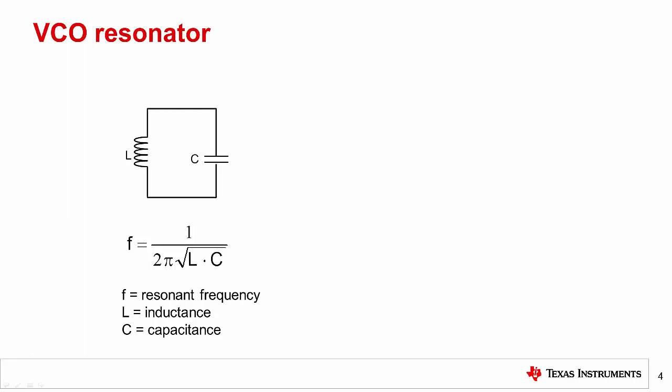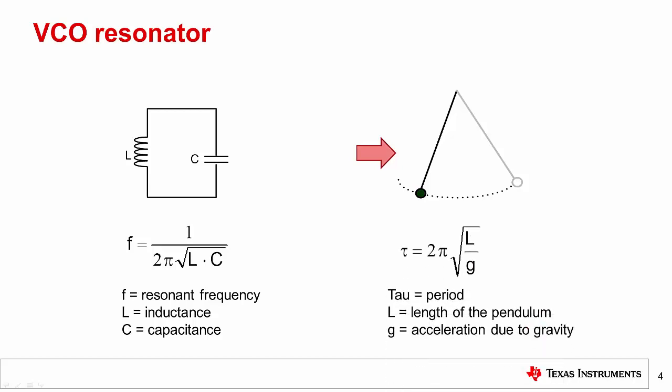The VCO resonant circuit can be compared to the pendulum of a cuckoo clock. The length of the pendulum determines a period, which enables the cuckoo clock to keep steady time. In order to keep the pendulum going, a stimulus is needed to be applied in the right way to maintain the oscillations without distorting the period of the signal. In an analogous way, a stimulus is needed for the LC circuit as well.